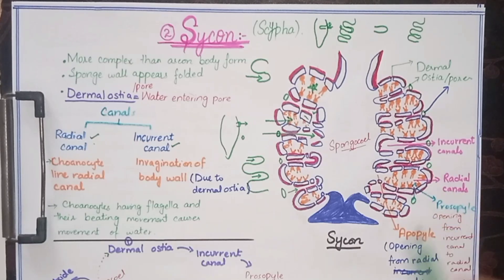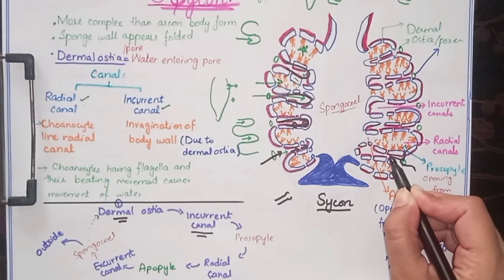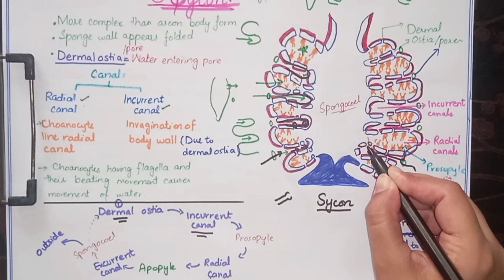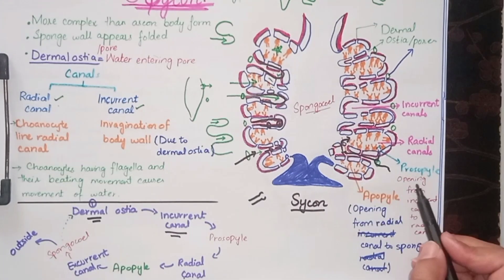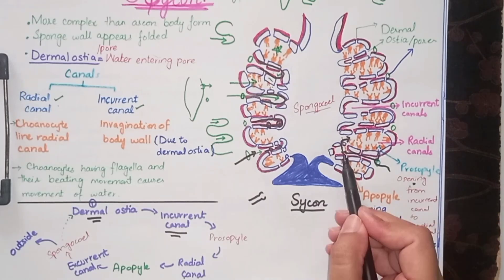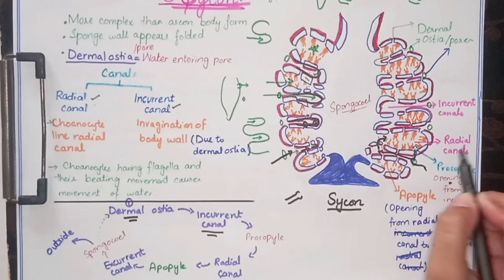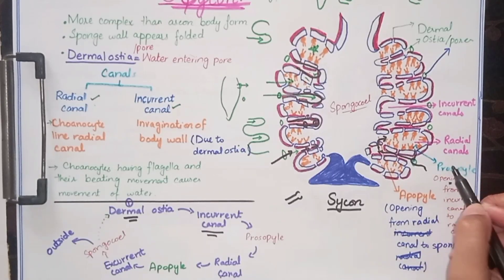So how does water enter in Sycon body form? From the dermal ostia, water enters the incurrent canal. From the incurrent canal, there is a chamber opening known as the prosopile, through which water enters the radial canal. The prosopile is basically an opening structure — it is a pore which moves water from the incurrent canal into the radial canal.